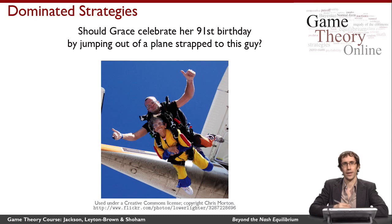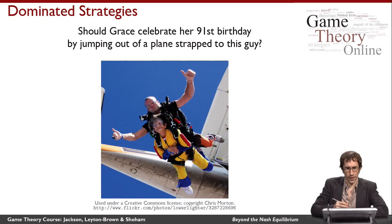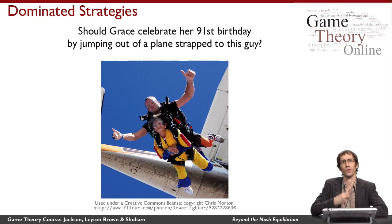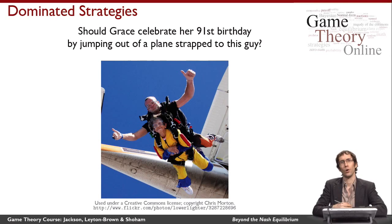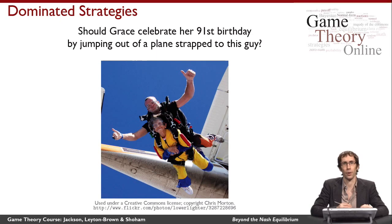So how was she able to reason that this was sensible? Well, if she looked at the payoffs of the game, she would see that Bruce's action of not packing the parachute safely was very bad — not only for Grace, but also for himself. In fact, it was a dominated strategy. And knowing that he's rational, Grace reasoned that he would never play a dominated strategy. So she was able to change the game by removing this dominated strategy and reason only about the remainder of the game. This is the idea of iterated removal of dominated strategies, which you'll hear about more formally later.